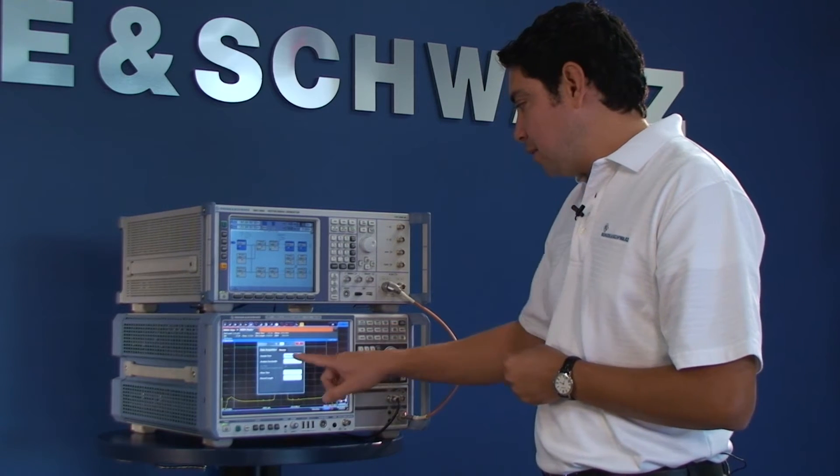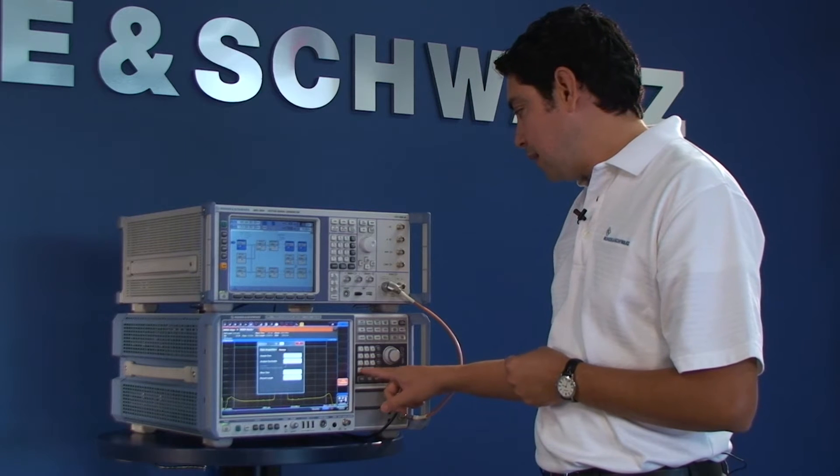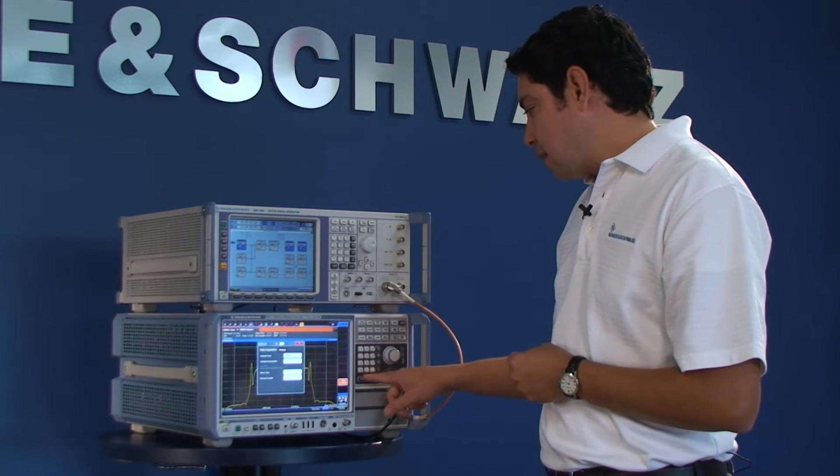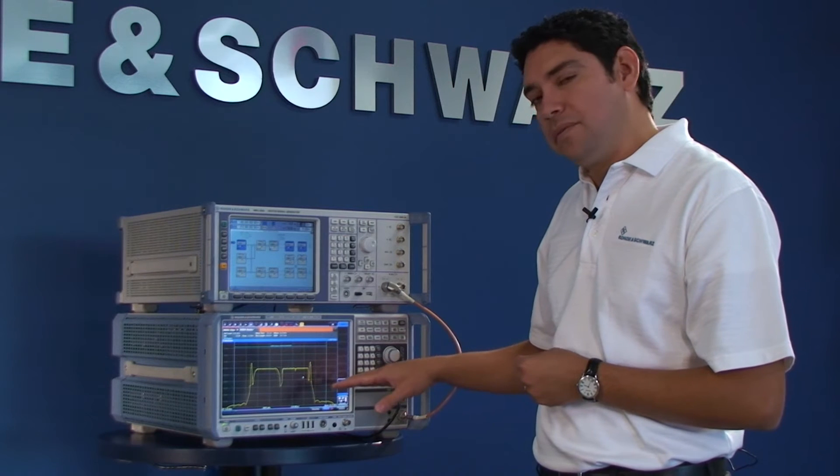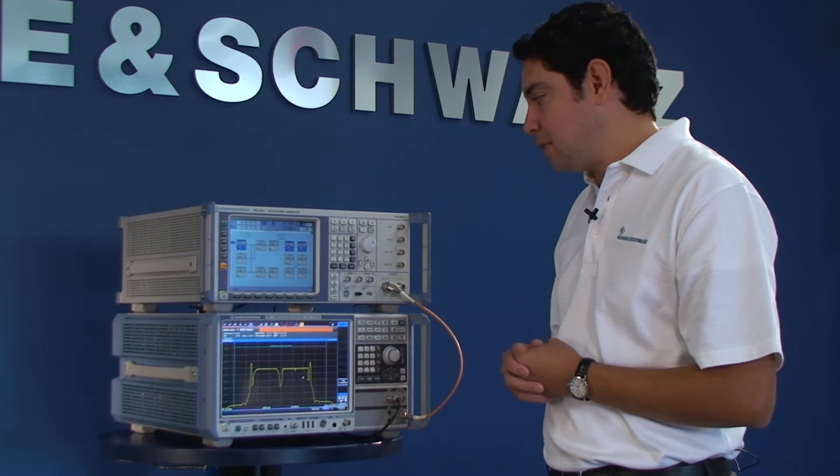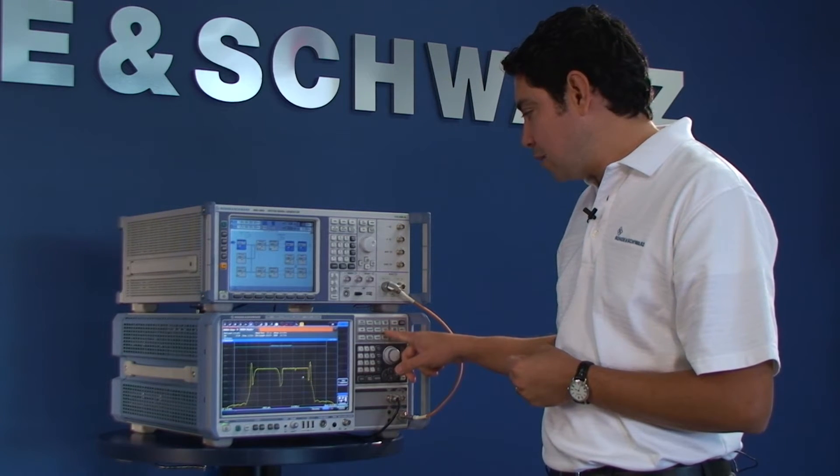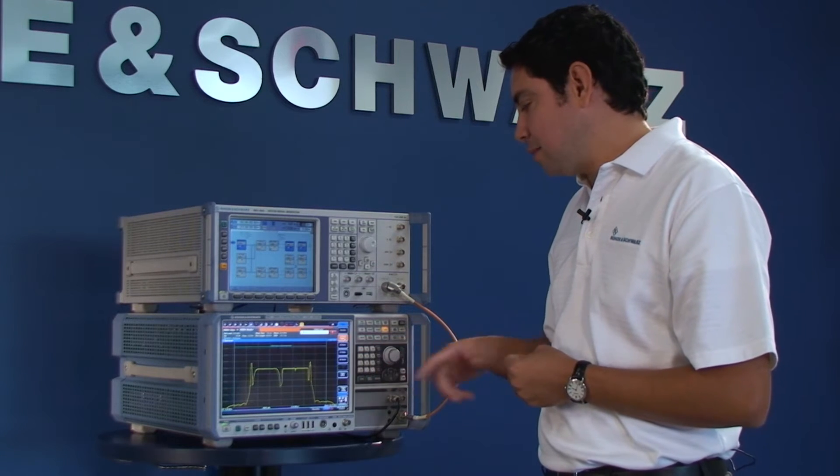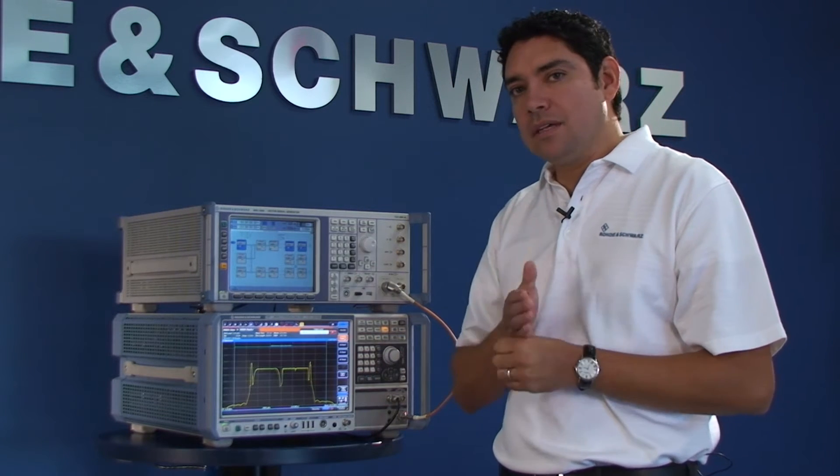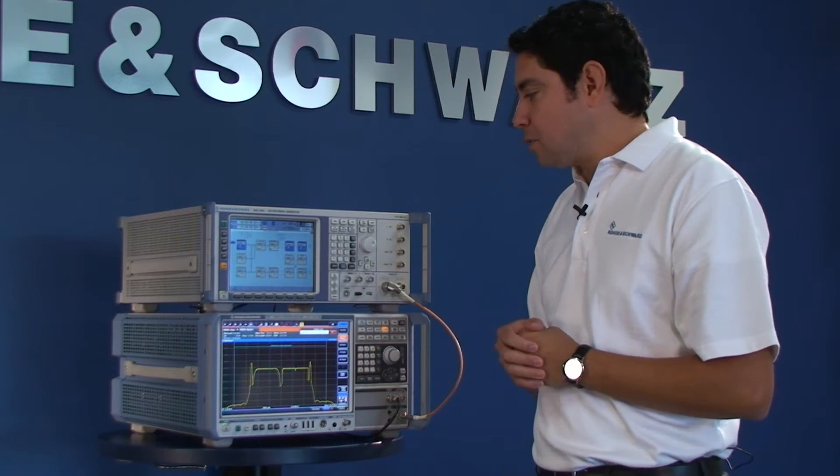First, I'm going to narrow the span of my analysis. And I can see a similar view to what I had from my spectrum analyzer. One more thing that I'm going to enable is my external trigger to have a constant value that triggers my acquisition.